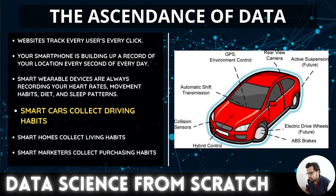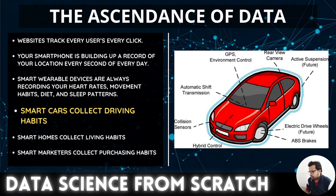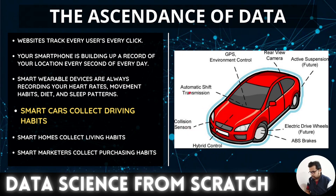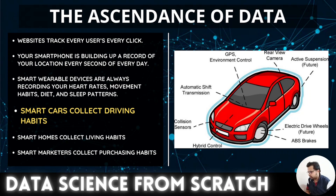We are heading toward an era of smart cars. Google has already launched a self-driving car that has been tested successfully over very long distances. A smart car collects driving habits — GPS, environment control, rear-view camera, active suspension, electric drive wheels, ABS brakes, hybrid control, collision sensors, and automatic shift transmission. Smart cars are also responsible for the ascendance of data.